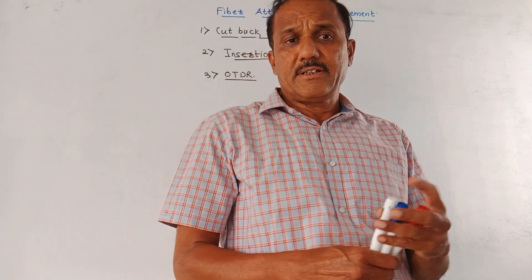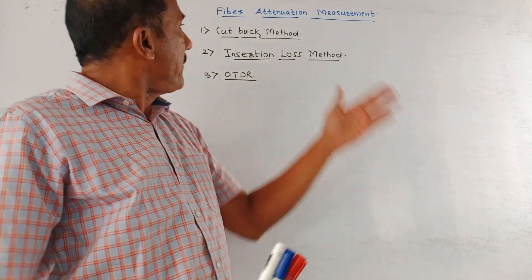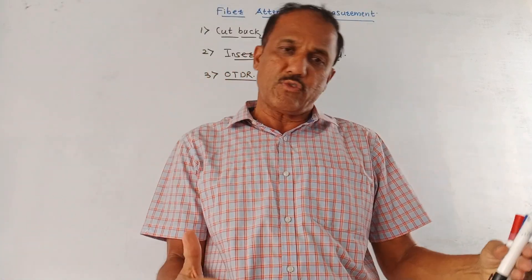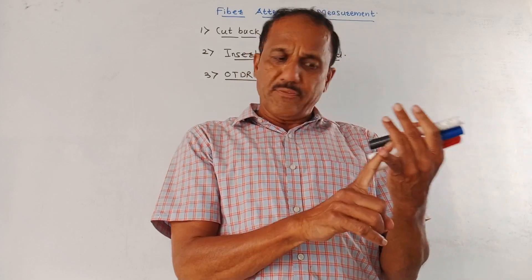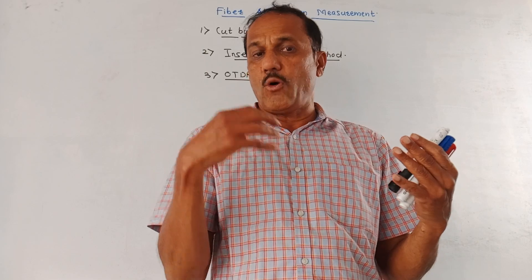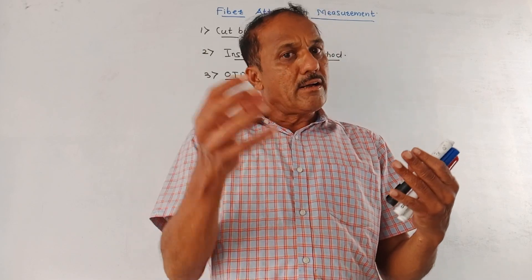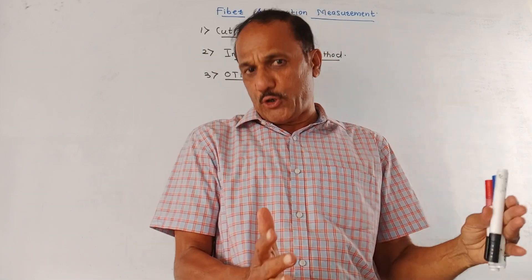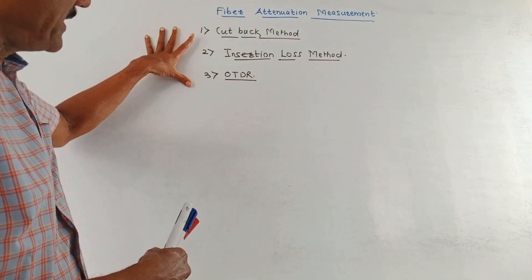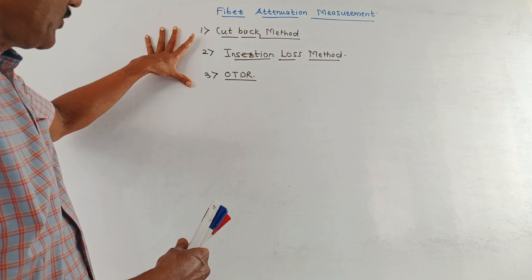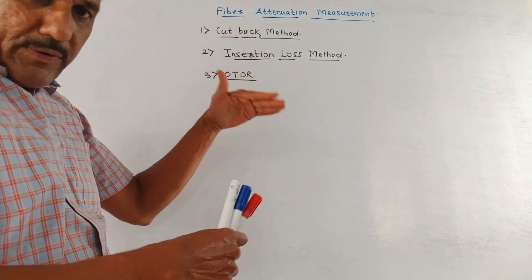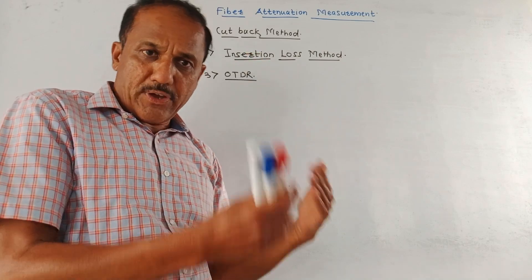The next part covers different fiber attenuation measurement techniques. From the exam point of view, you may be asked: 'What are the different methods used for measuring the attenuation of optical cable and comment on accuracy?' The three common methods are used for measuring fiber attenuation. We will discuss every method and then discuss the accuracy of each method.